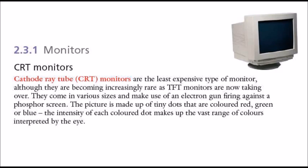The picture is made of tiny dots on these screens called pixels, and these are colored in three basic colors: red, green, and blue. The intensity of each colored dot makes a vast range of colors interpreted by the eye.